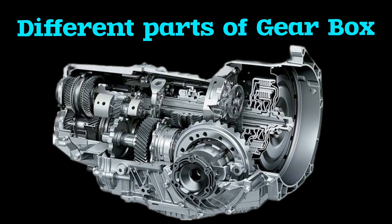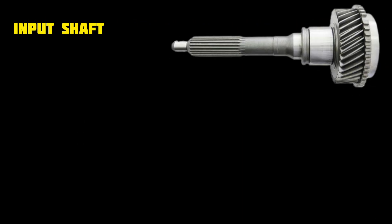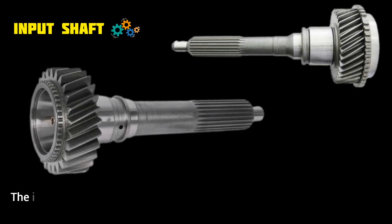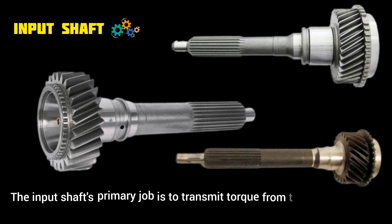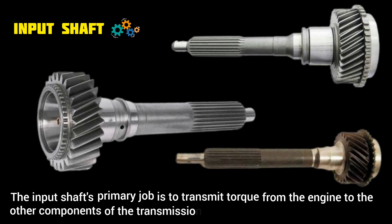Different parts of a gearbox. The input shaft's primary job is to transmit torque from the engine to the other components of the transmission.